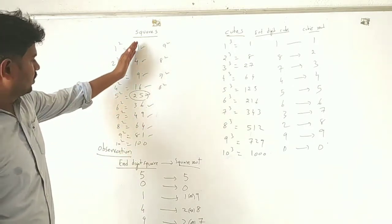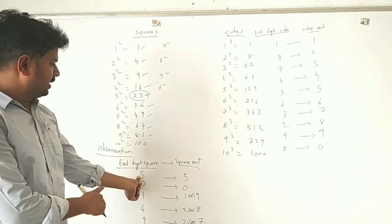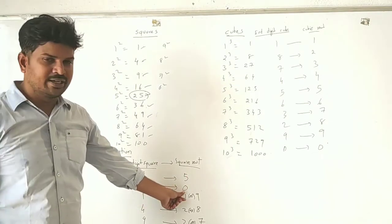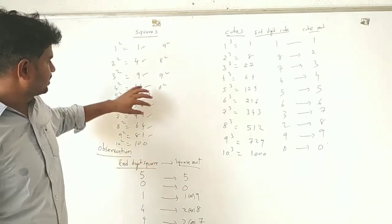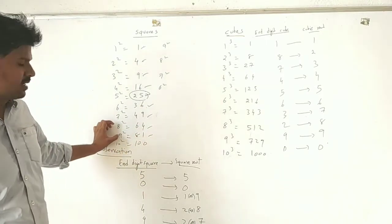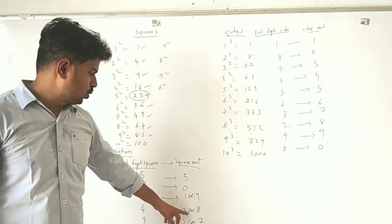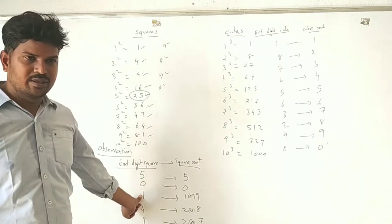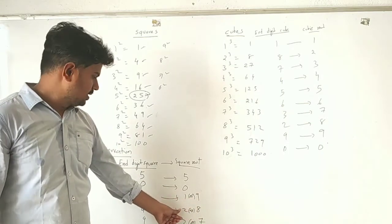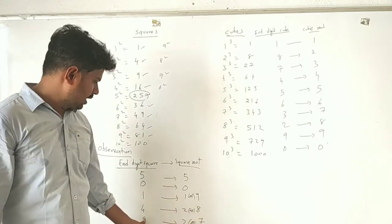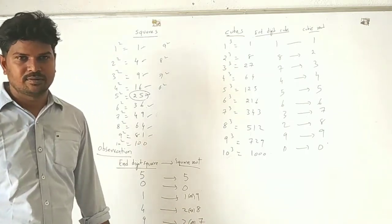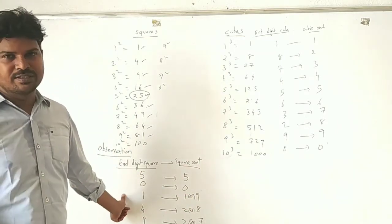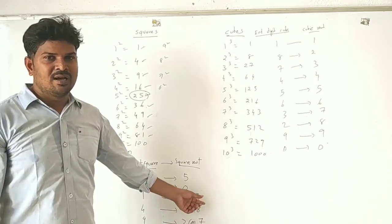From this observation: if the unit digit of a square is 5, the unit digit of the square root is 5. If the unit digit of the square is 0, the unit digit of the square root is 0. If the unit digit is 1, the square root's unit digit may be 1 or 9 — because 1 plus 9 equals 10. For 4, it is 2 or 8; for 9, it is 3 or 7; for 6, it is 4 or 6. All pairs add up to 10, which is the rule to remember.